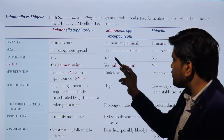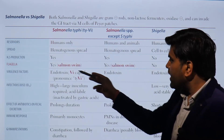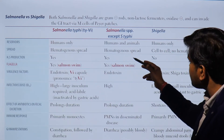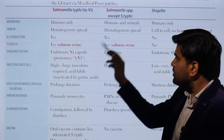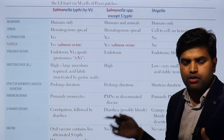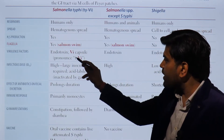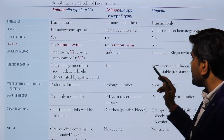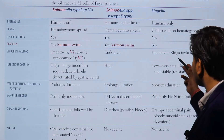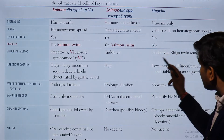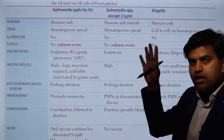Regarding H2S production: Salmonella species produce H2S gas, while Shigella does not. Regarding flagella: Salmonella have flagella and are motile — sometimes called 'salmon swim' — whereas Shigella are non-motile with no flagella. As for virulence factors: being gram-negative, all have endotoxin. Salmonella typhi also has a Vi capsule; other Salmonella species have endotoxin only.